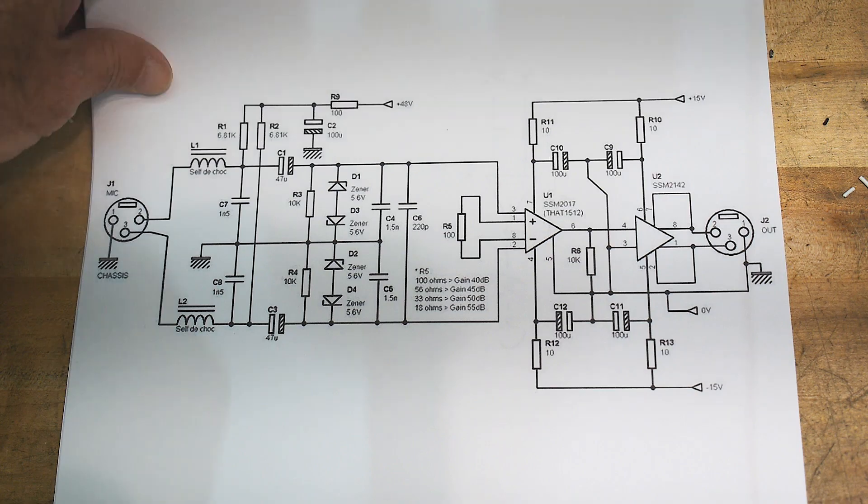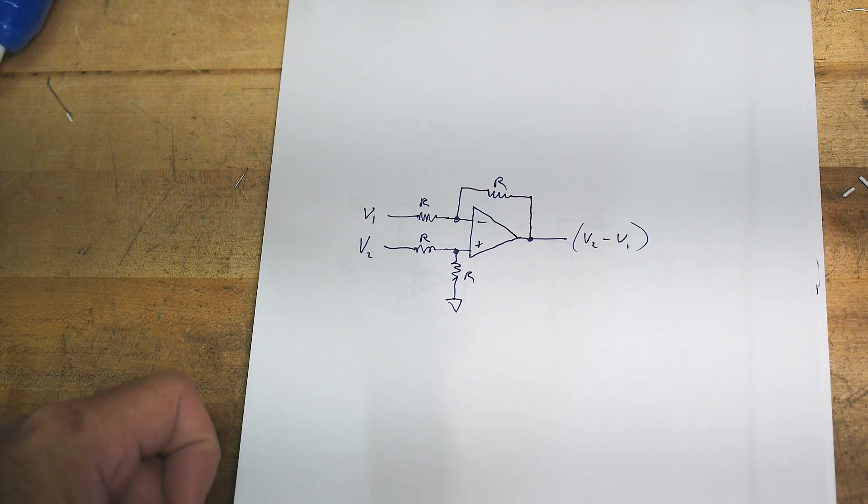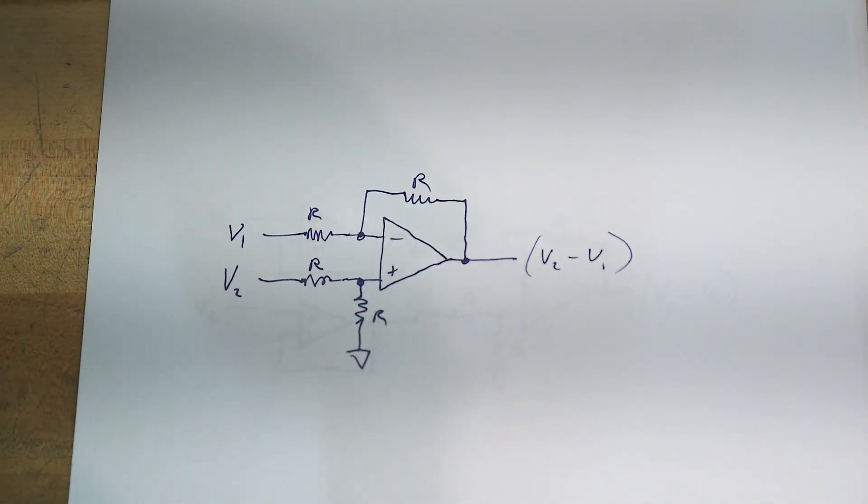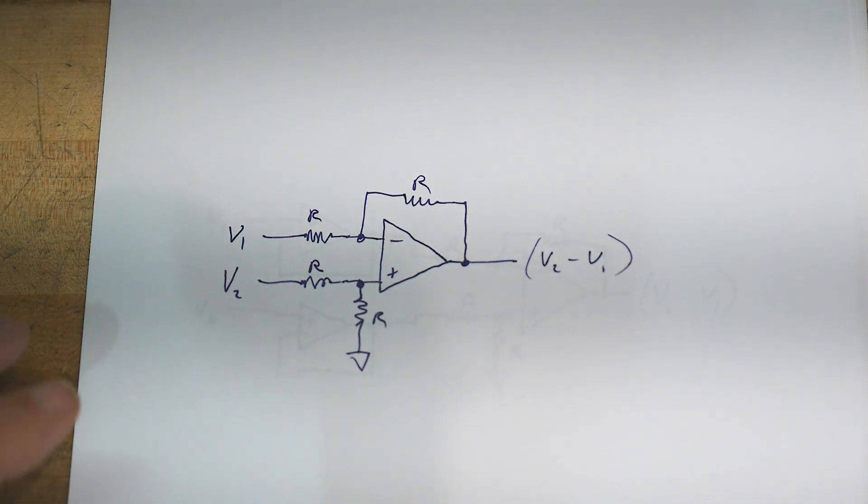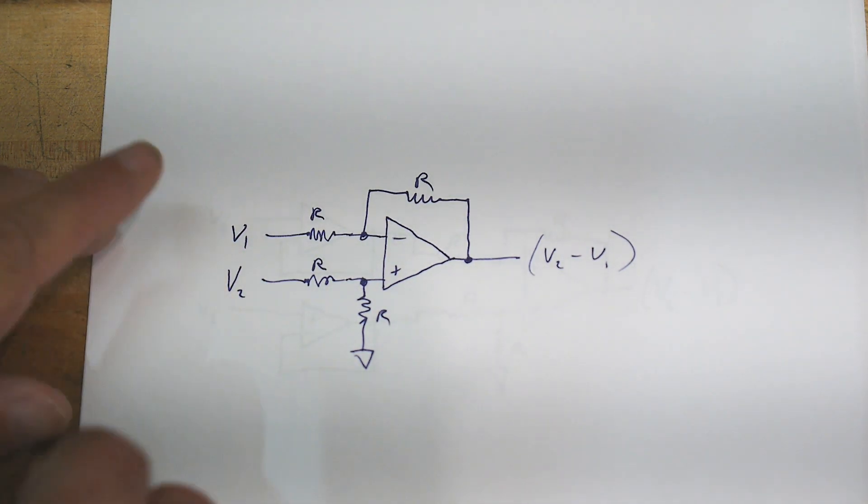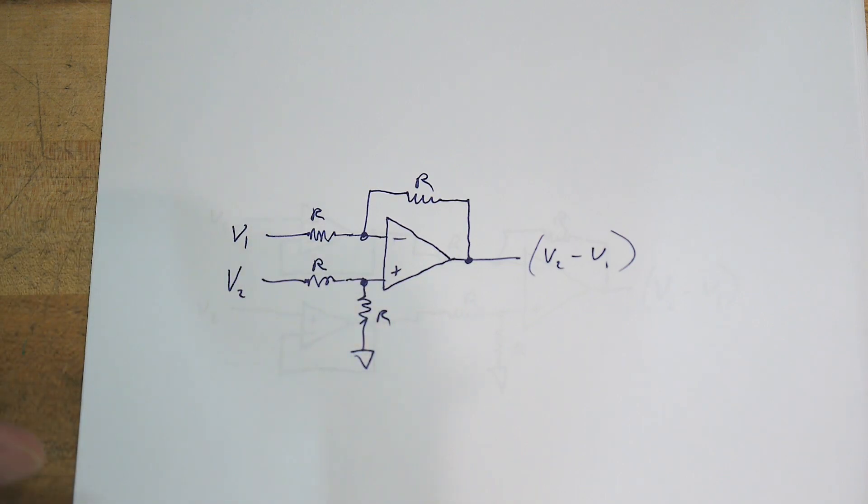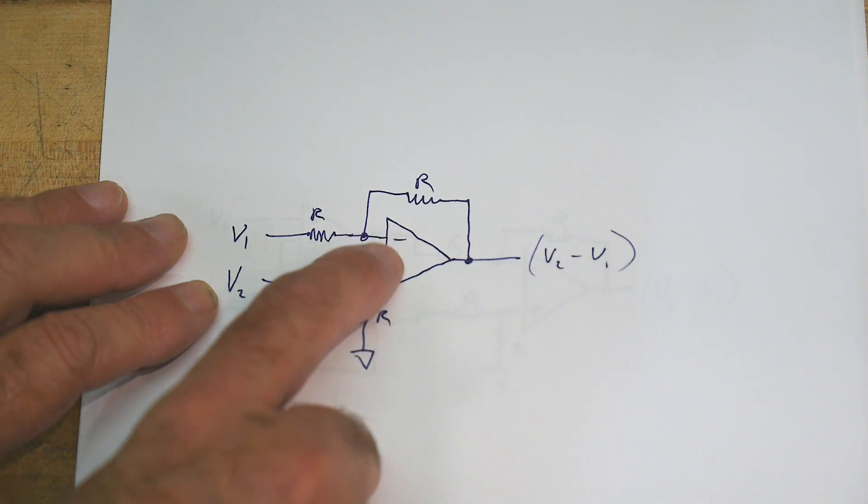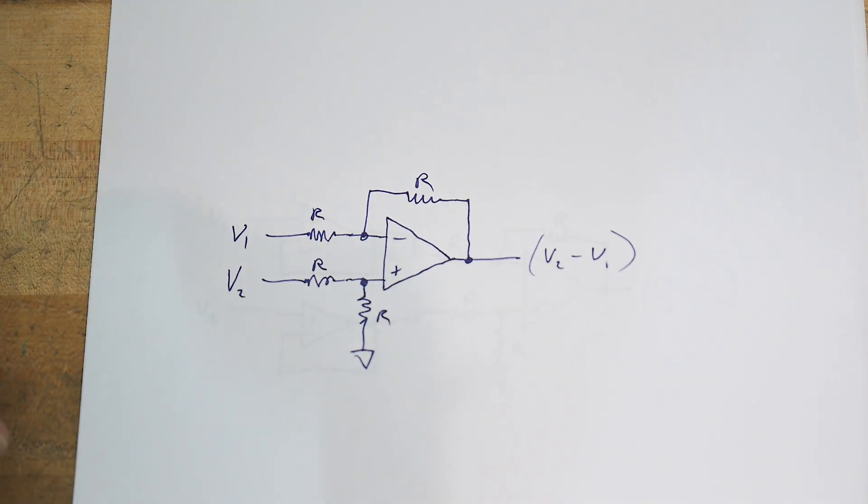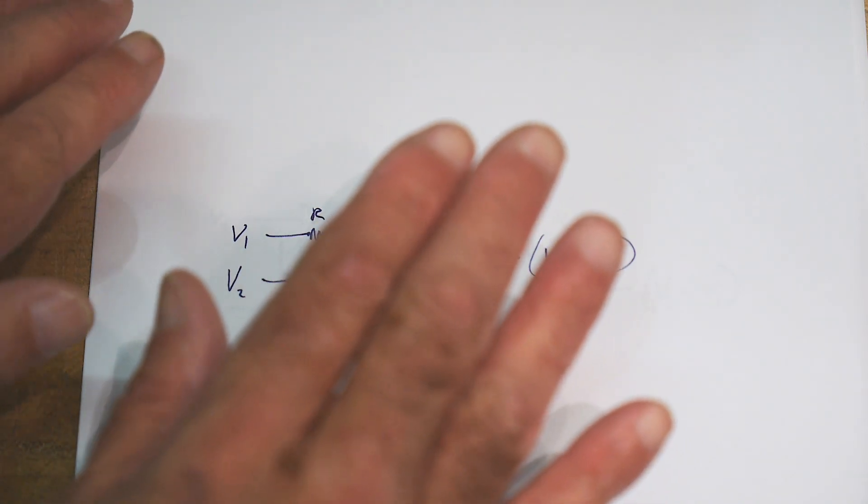The first thing is we need a difference amplifier. We need to measure the difference between these two voltages, and so we can use an op amp with four resistors. The way that this works is we have a plus and minus, we have this teeter-totter, and we need them to be the same or it's measuring the difference. If the teeter-totter is off center, that's the difference between the two.